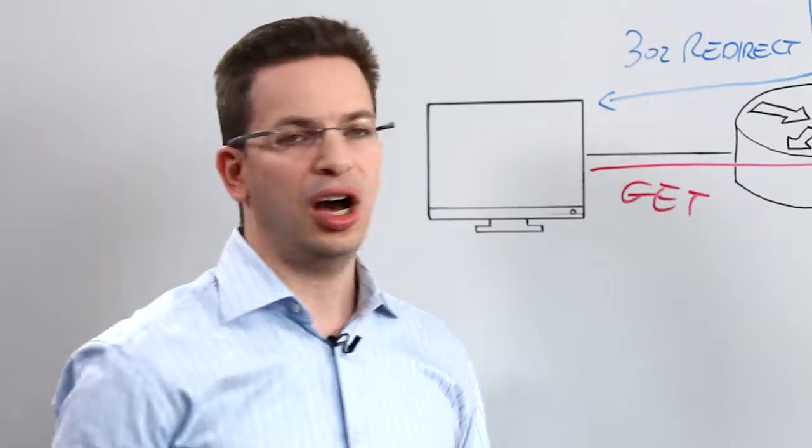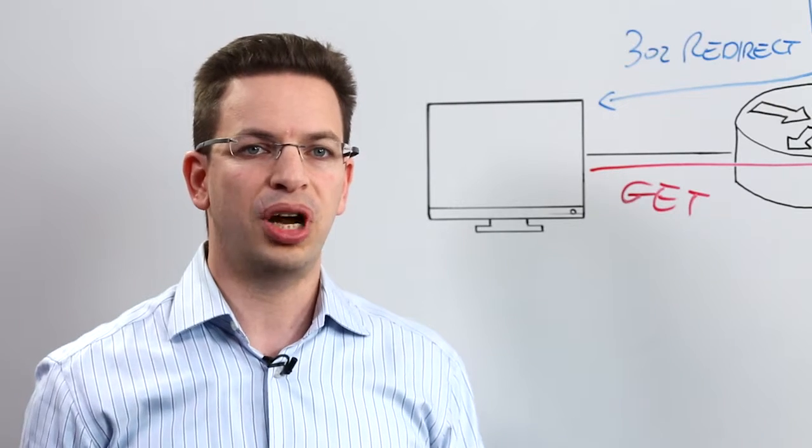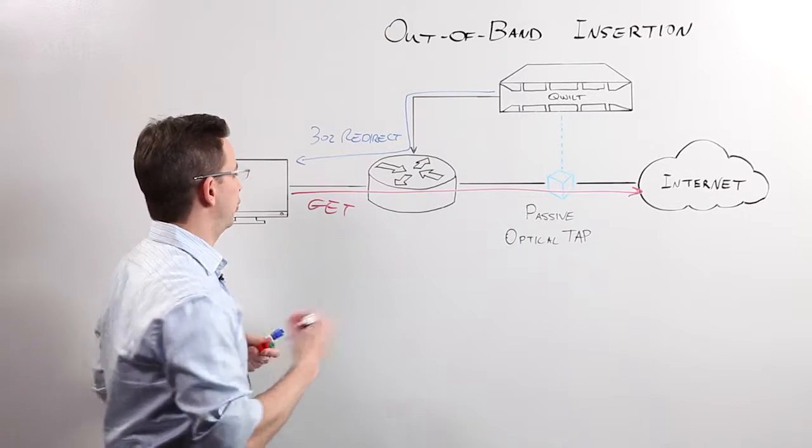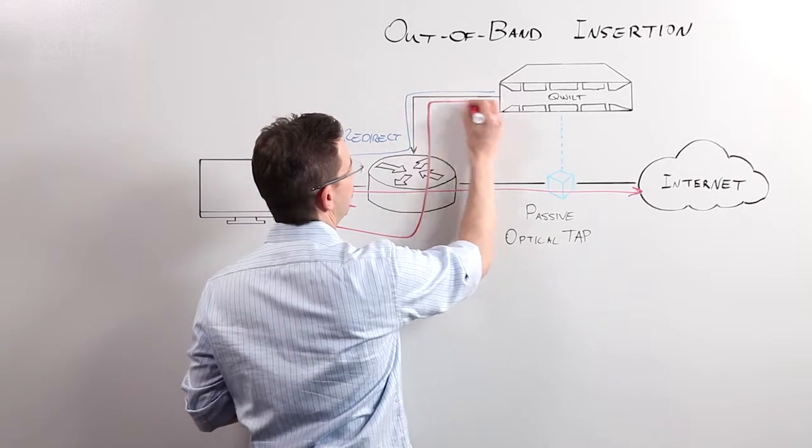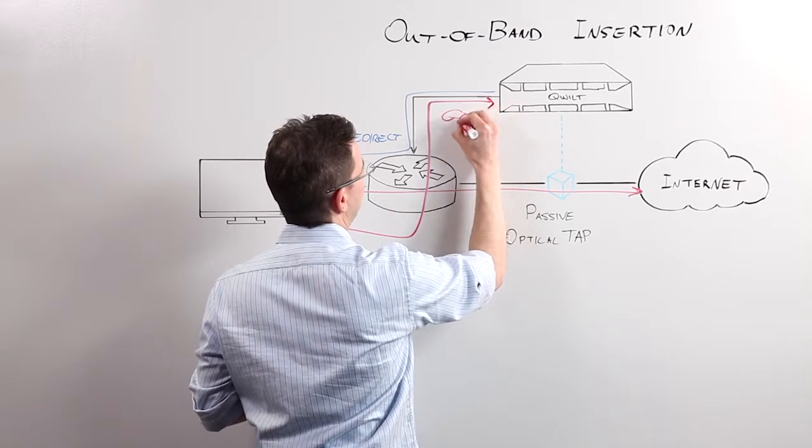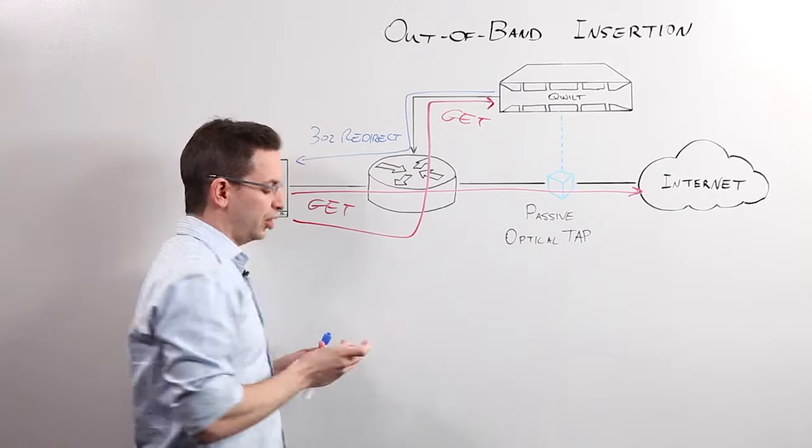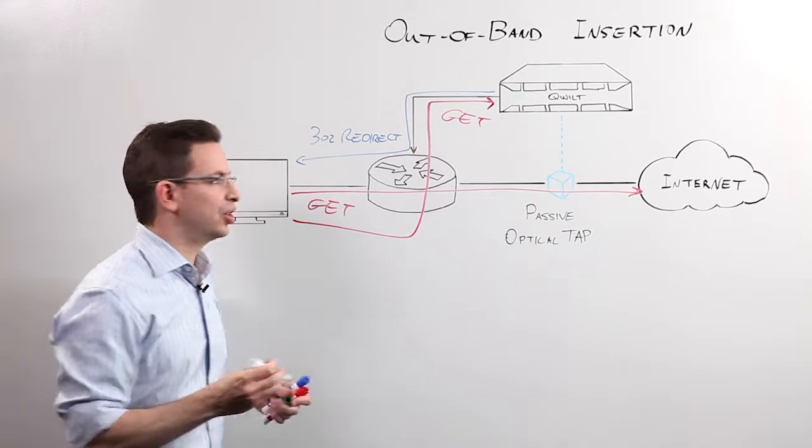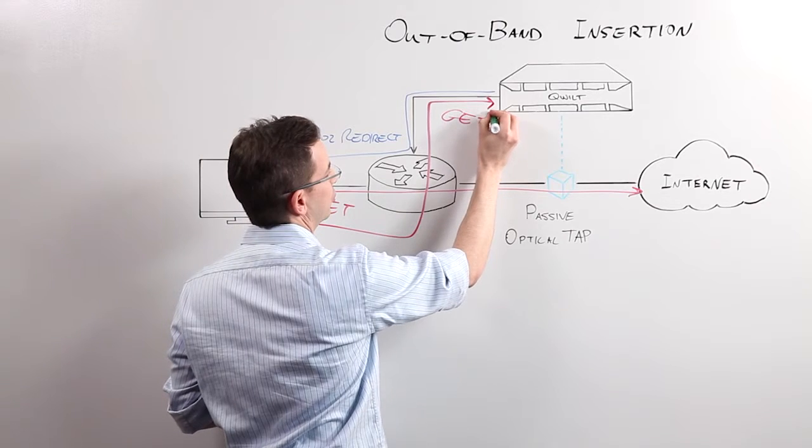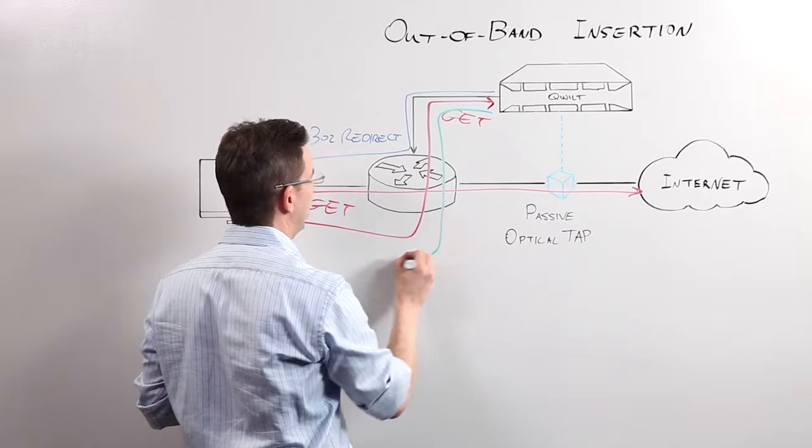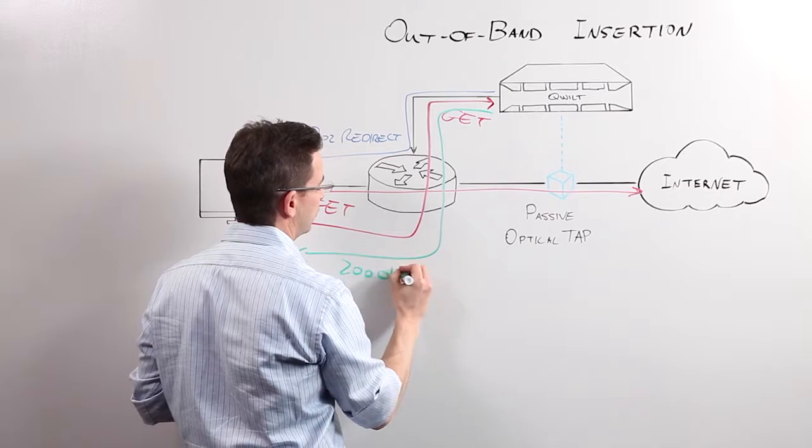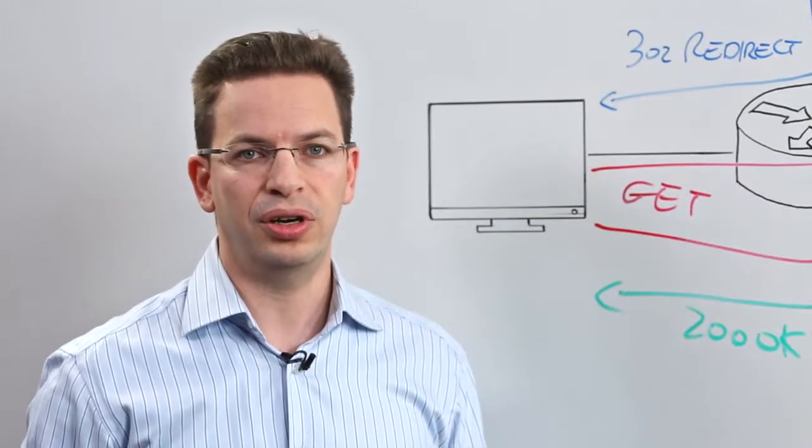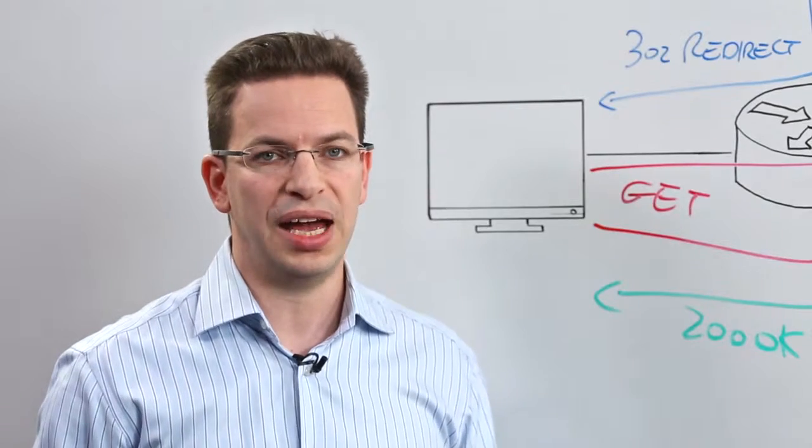The next step of the flow would be for the consumer to issue a new GET request back to the QB series video delivery interface. At this point, video serving actually starts to happen, and then through the same interface we would send a 200 OK message with the actual content, and this would be viewed on the screen whichever screen the subscriber is actually using.